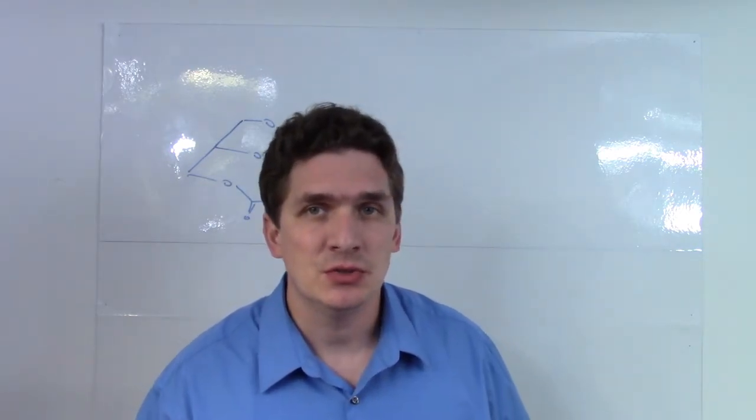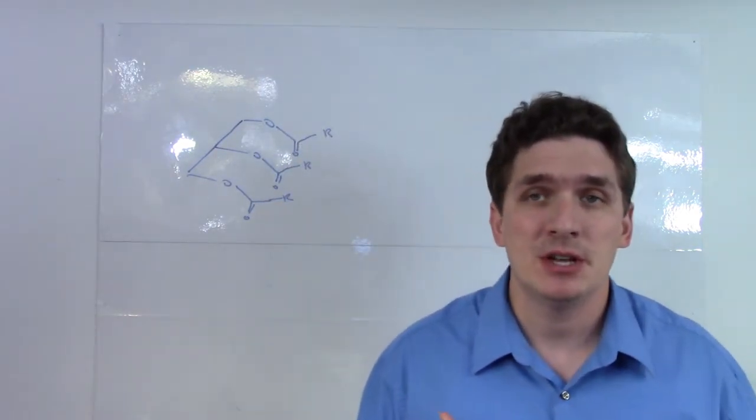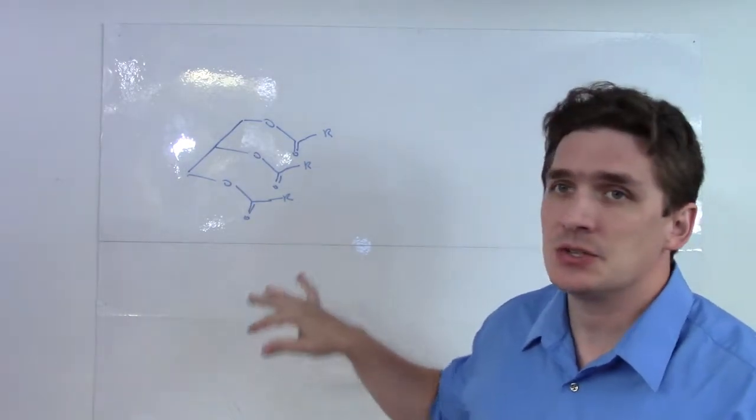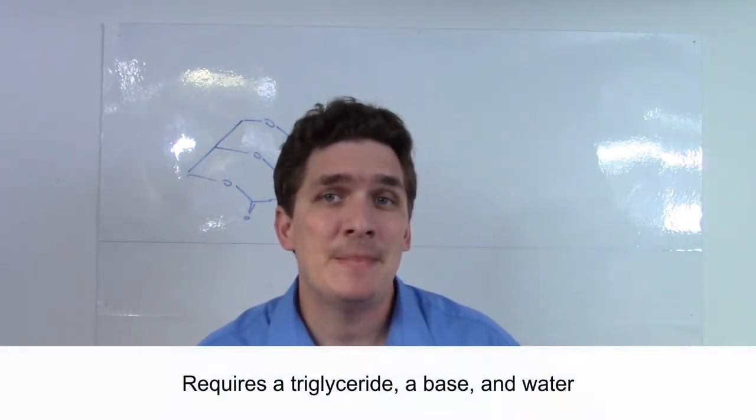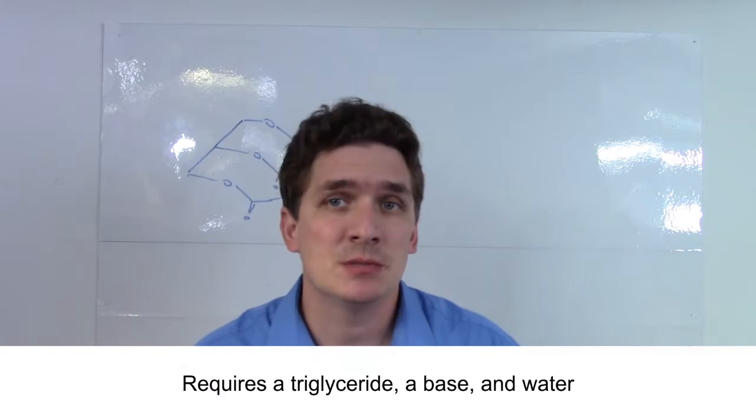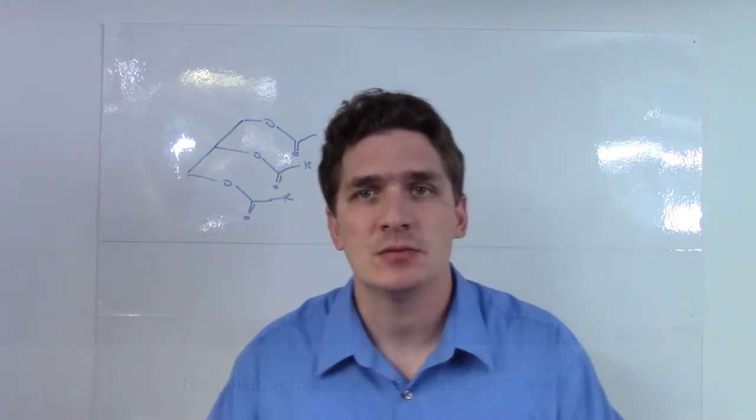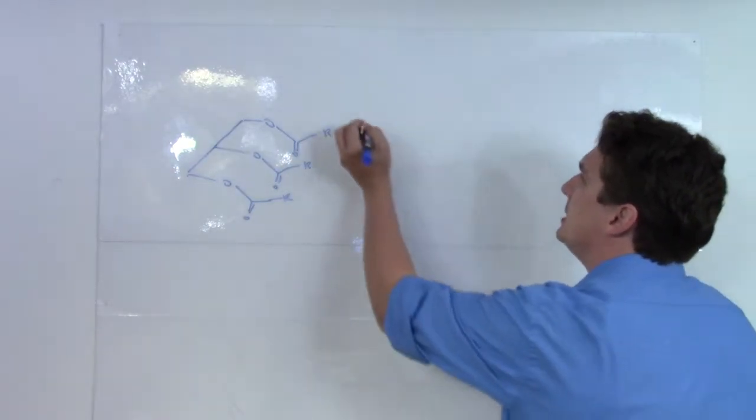So what does saponification do? To undergo saponification, the first thing we need is a triglyceride. We're going to use a base-catalyzed reaction - it's going to be base for two reasons, but one is a catalyst, and we're going to specifically work under aqueous conditions.